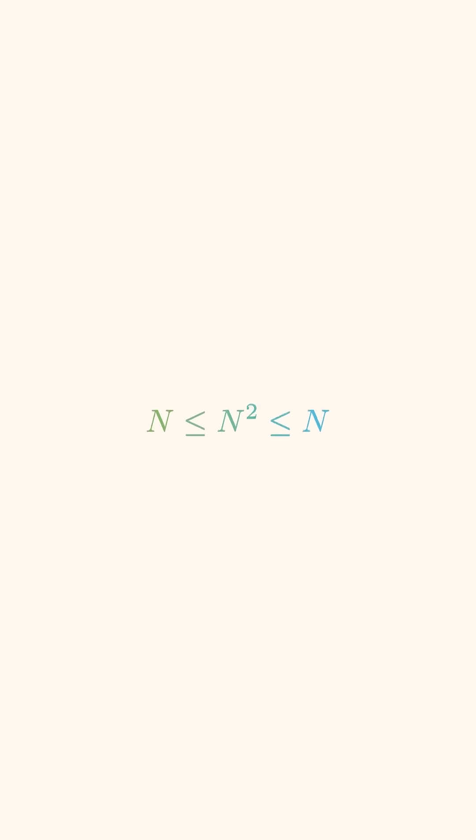So if we combine these two inequalities, we get n is less than or equal to n squared, which is less than or equal to n. The only value that n squared can have is if it's equal to n.